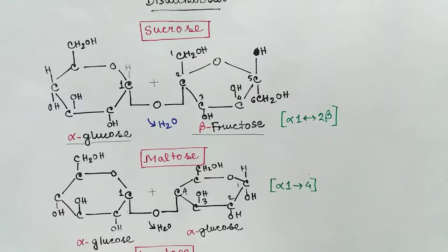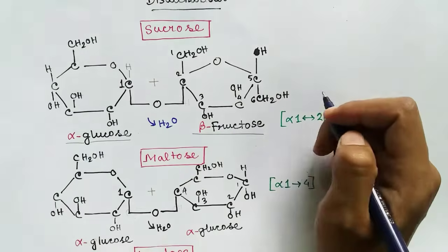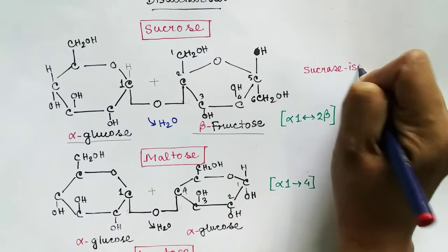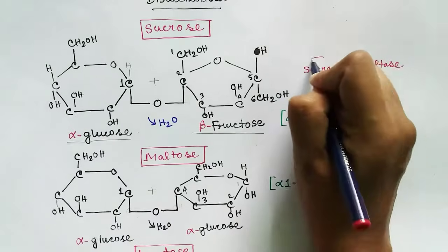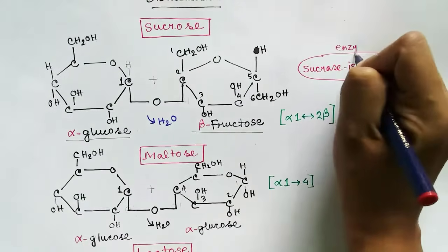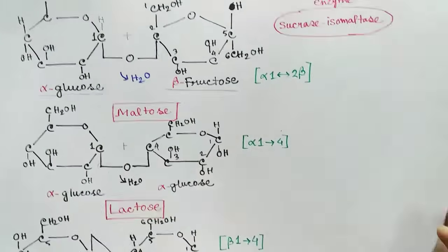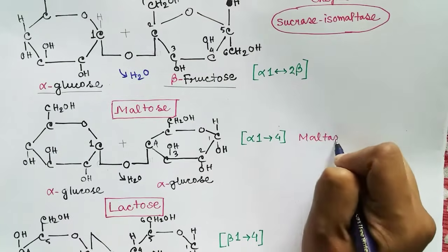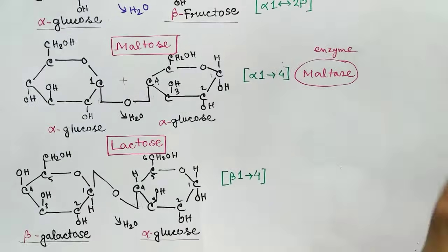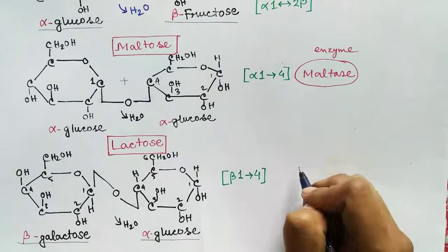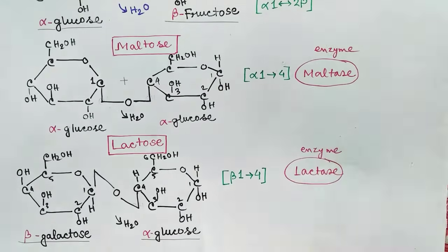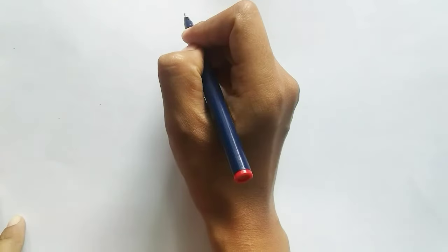Sucrose, maltose, and lactose are all part of our food, so there are enzymes to break them down in the gastrointestinal tract. The glycosidic bond of sucrose is broken down by sucrase-isomaltase. In the case of maltose it is done by maltase enzyme, and in lactose it is done by the lactase enzyme.